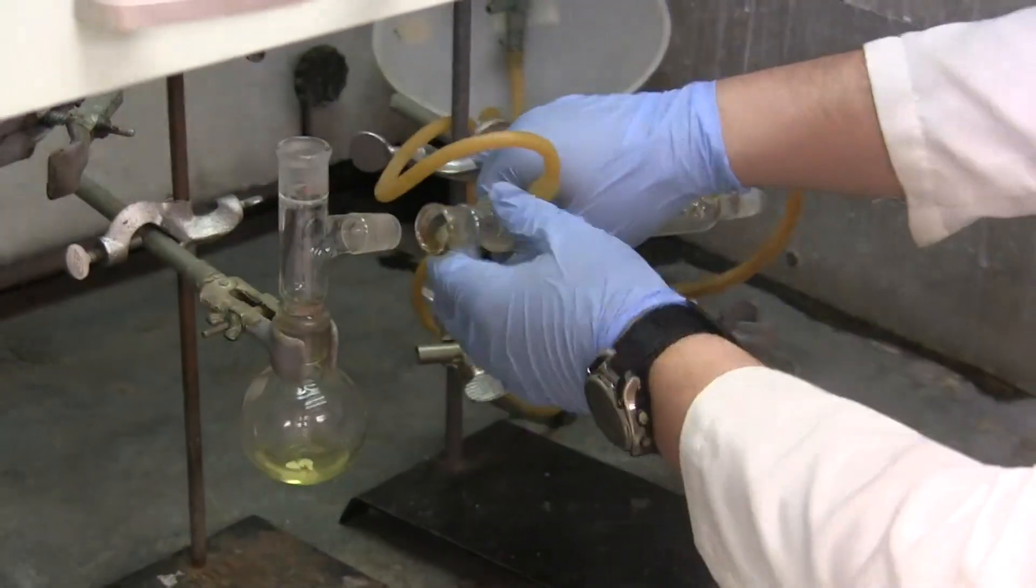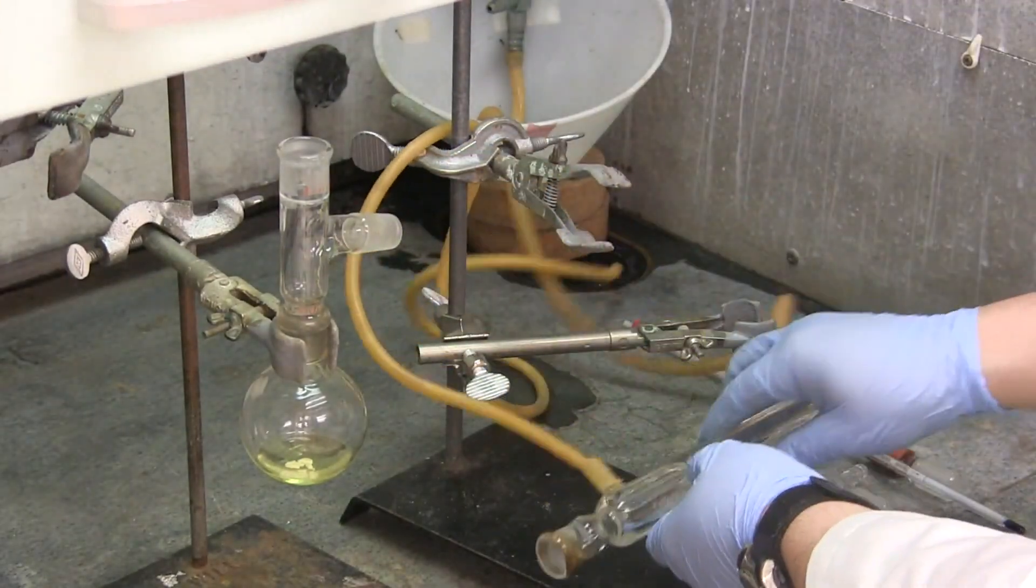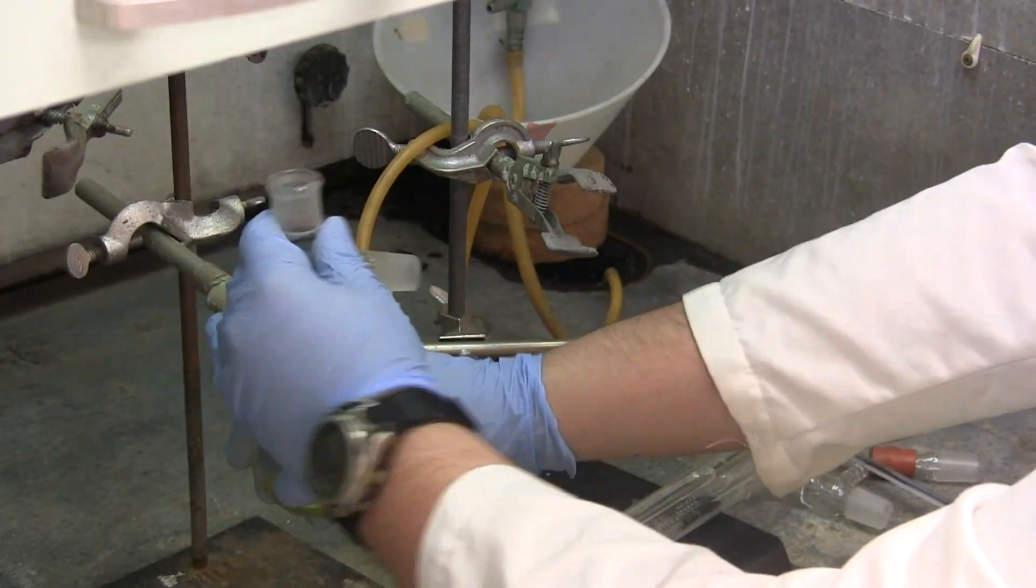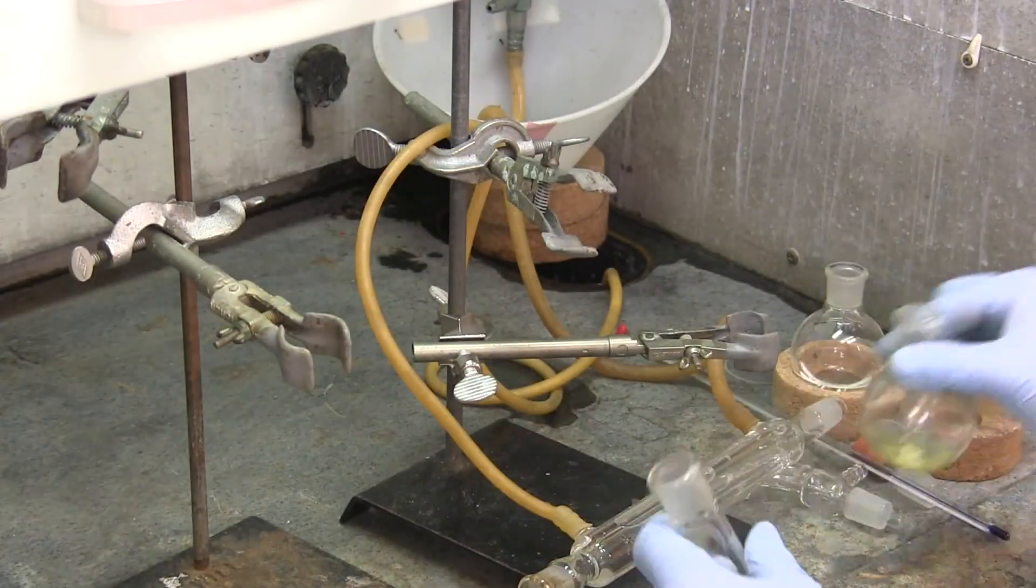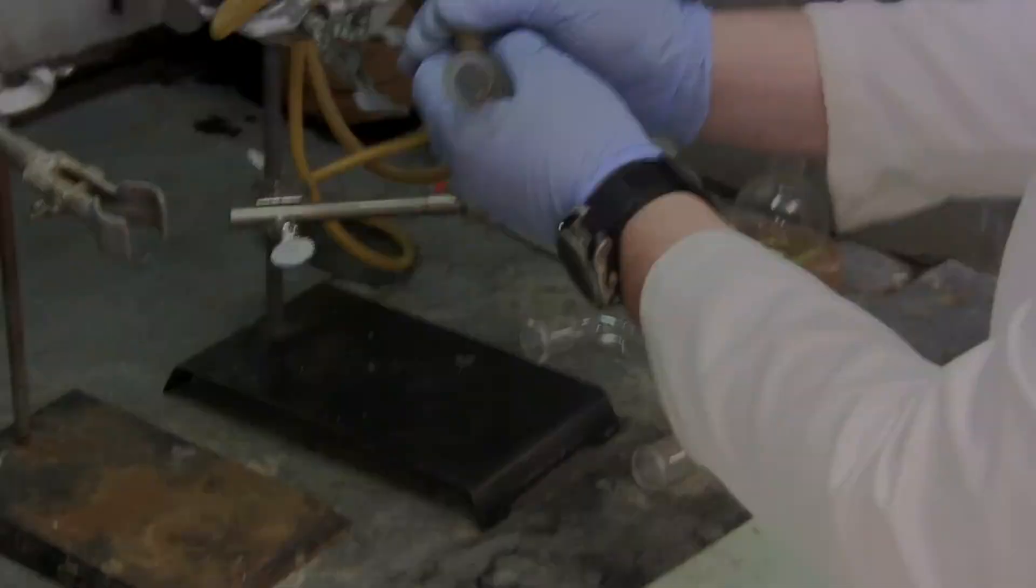At this point, you should turn off the heating mantle and let the flask cool down. Once it's cool to the touch, start disassembling the apparatus and rinse with acetone to clean.